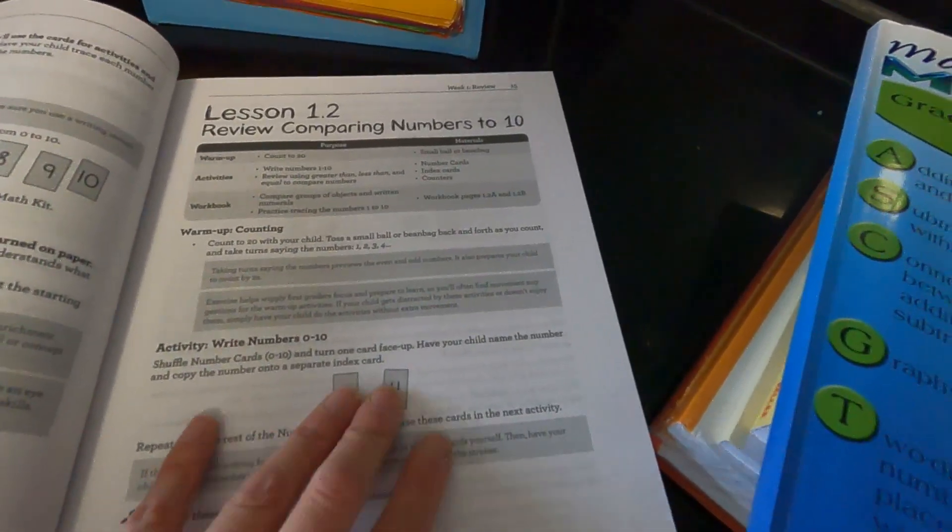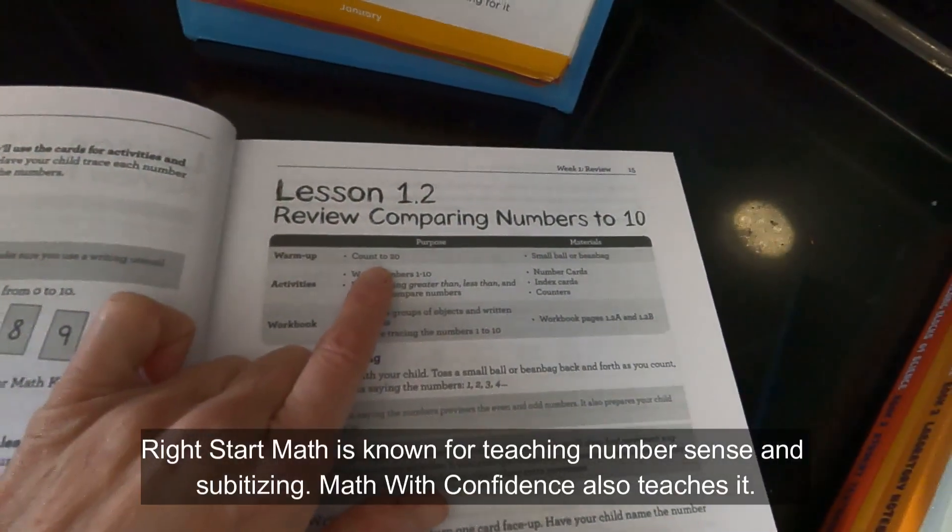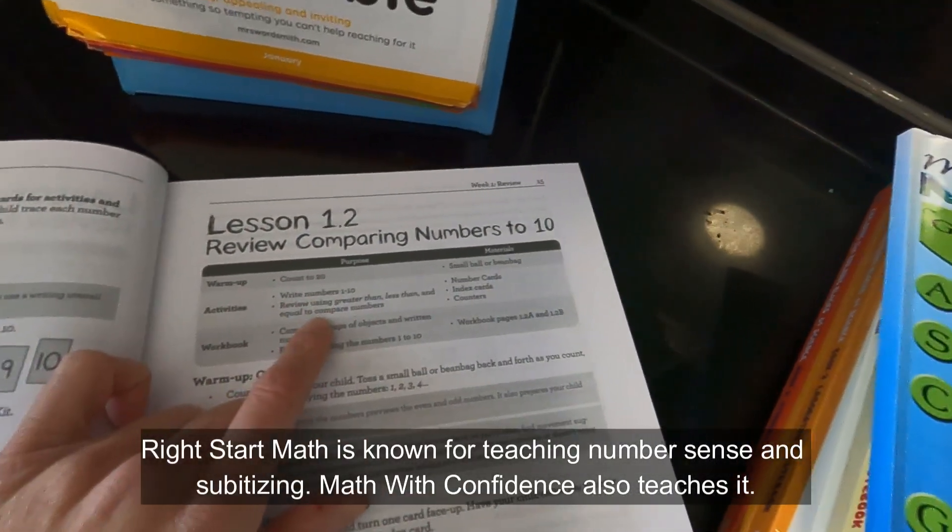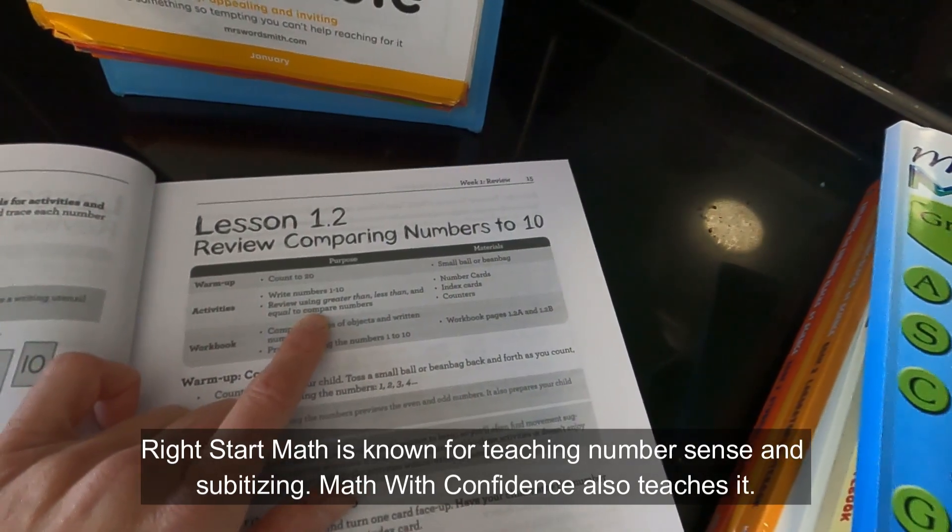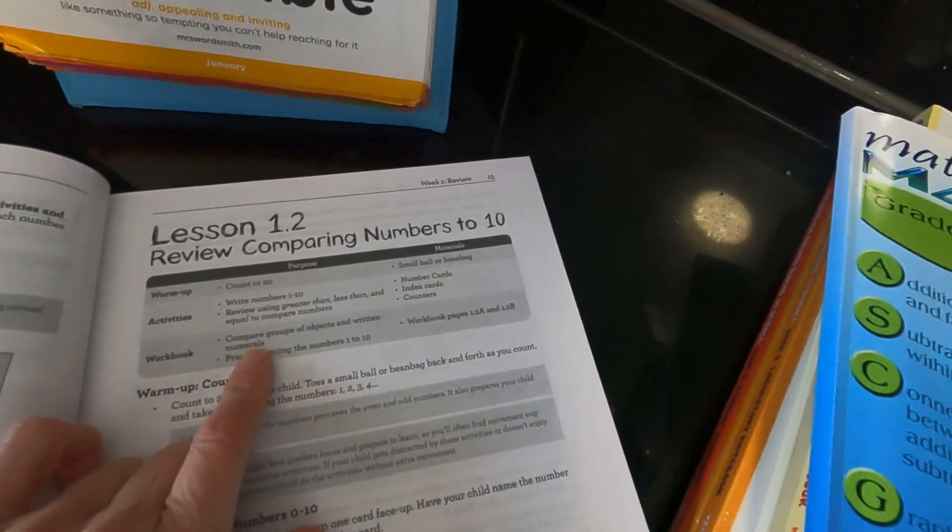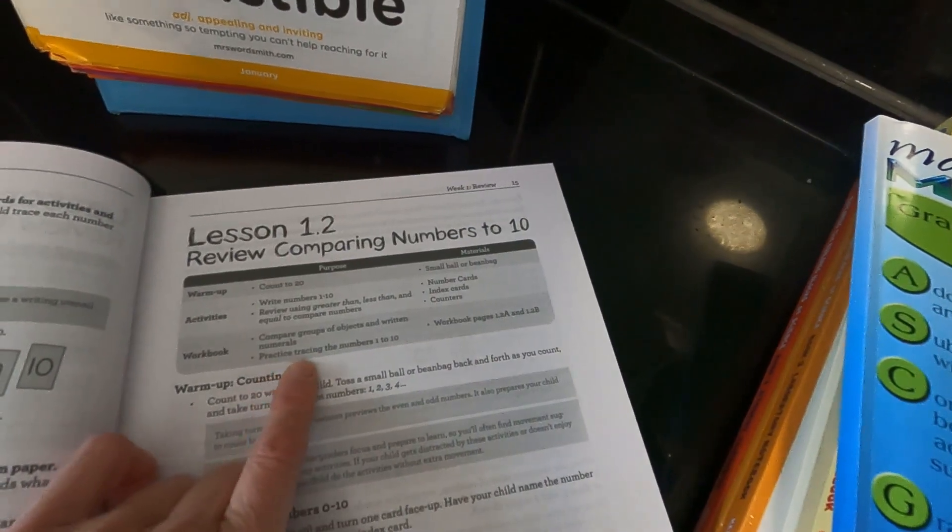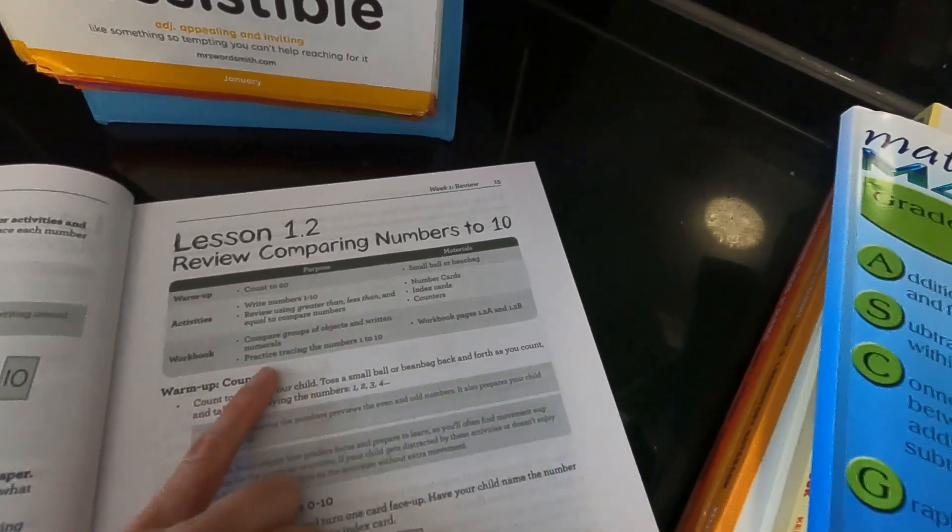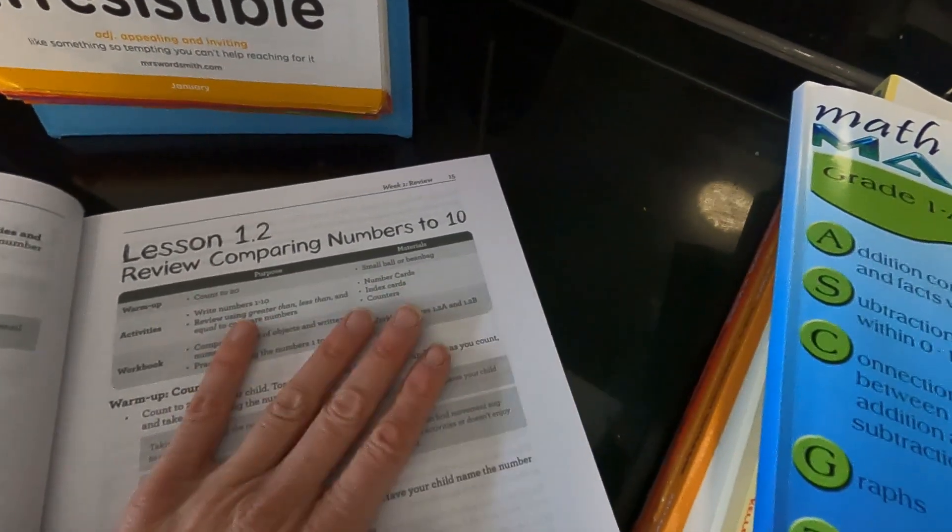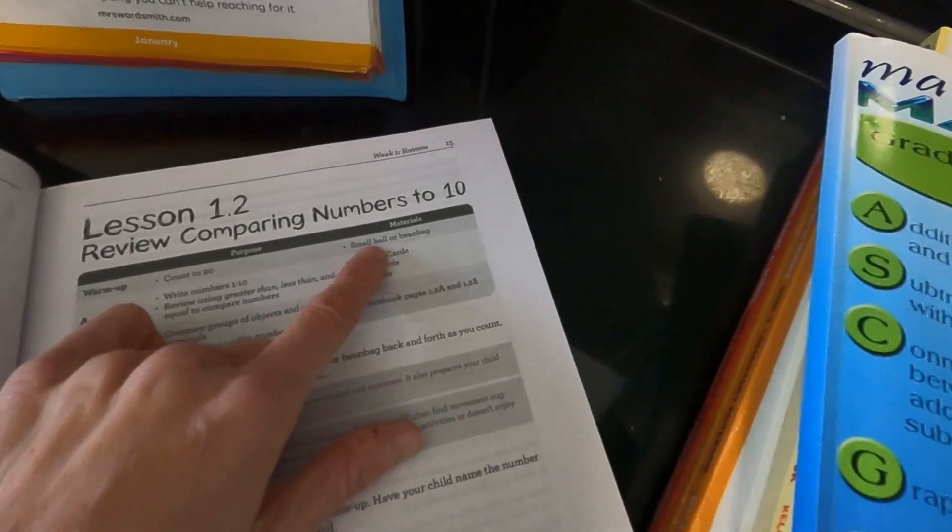And you learn number sense, you learn all those things you wanted like with Right Start Math, but without the price of Right Start Math. So you'll do a warm-up, count to ten, the activities: write numbers one through ten, review using greater than and less than and equal, compare groups of objects, written numerals, practice numbers one to ten.